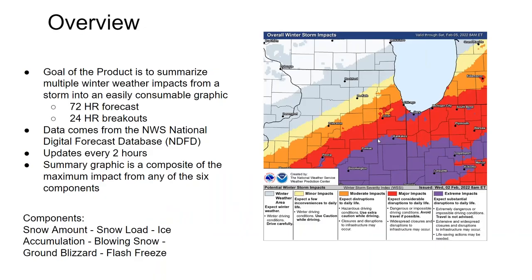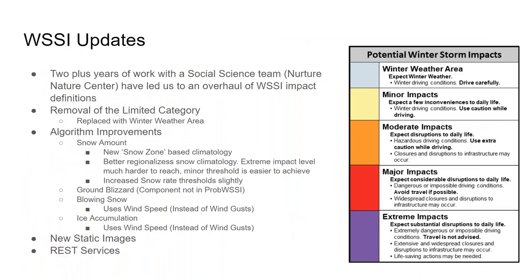As many of you are familiar with, the overview of the WSSI is to summarize multiple winter weather impacts from a storm into an easily consumable graphic. Currently we have 24-hour breakouts and a 72-hour summary forecast. The components of the WSSI are snow amount, snow load, ice accumulation, blowing snow, ground blizzard, and flash freeze. After working with a team of social scientists from the Nature Nurture Center, we've completely overhauled the definitions of the WSSI this year — a multi-year effort working with folks from all over the country and focus groups from emergency managers up to folks in big business.